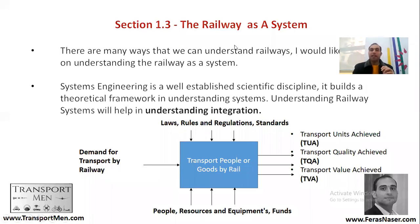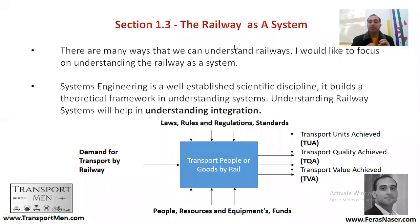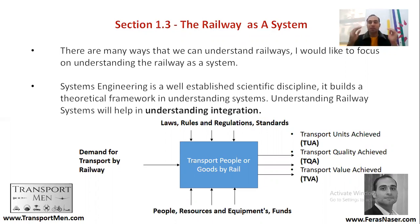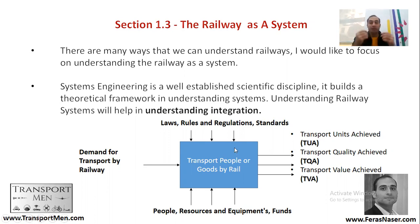Systems engineering is a well-established scientific discipline with a theoretical framework for understanding systems. At a high level, we can represent the railway as a box: a system that transports people or goods by rail. The components that enter this system are: first, demand — a need to transport large numbers of people; second, laws, rules, regulations, and standards; and third, people, resources, equipment, and funds.